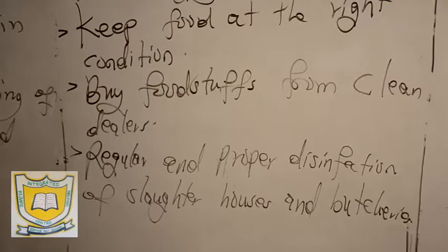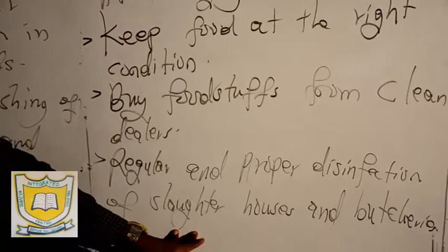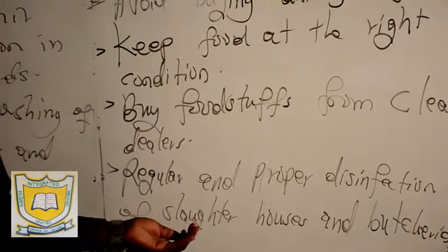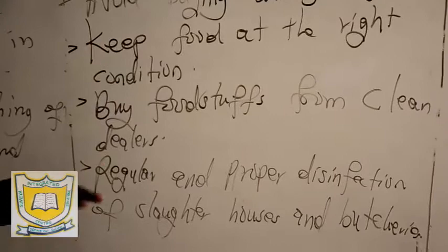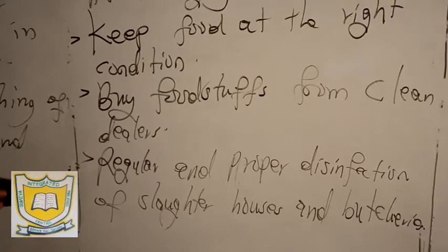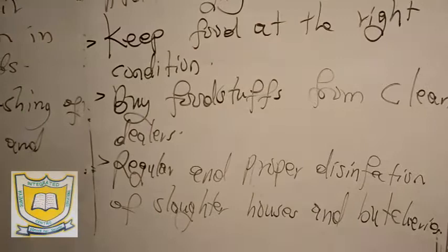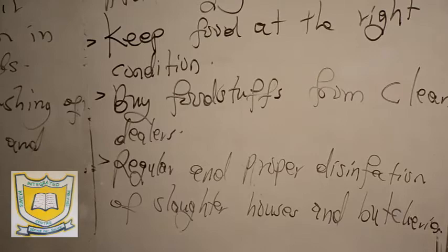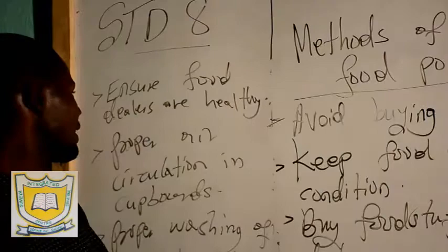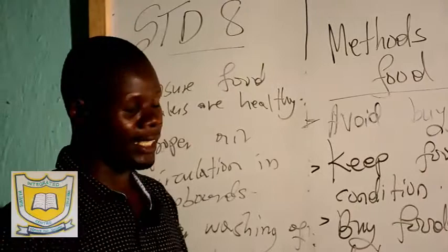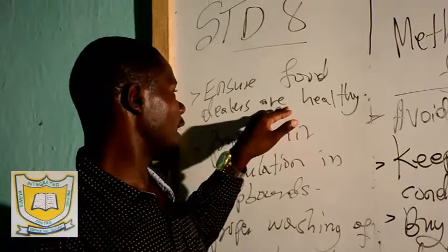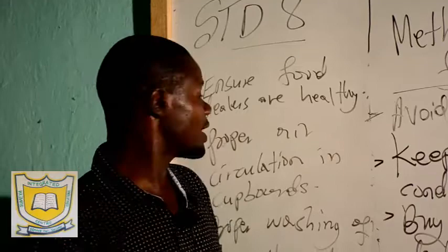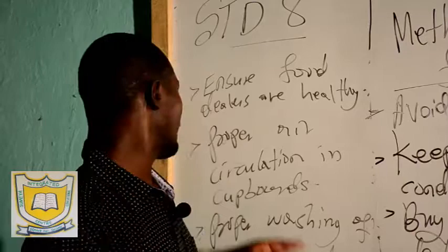Regular and proper disinfection of slaughterhouses and butcheries. These are places where animals are slaughtered for beef, pork, or mutton. If not disinfected, there will be microorganisms — bacteria and viruses — staying there. Butcheries and slaughterhouses must be disinfected regularly. Ensure food dealers are healthy — they should not be contaminated and must have letters from health centers to confirm they have not contracted diseases like HIV/AIDS, COVID-19, or other diseases. They must be certified healthy before selling food to people.